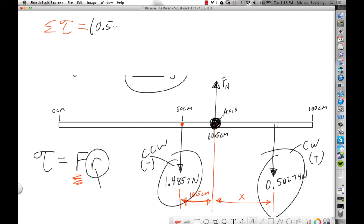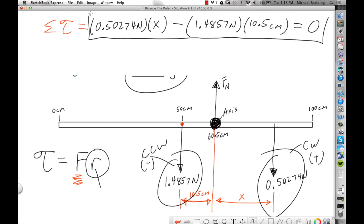we're going to go 0.50274 Newtons times X - force times distance, and are they perpendicular? Yes. Then minus 1.4857 times 10.5 centimeters. Now, I usually have you guys convert to meters. It doesn't matter here. If you leave this in centimeters, then that means that X will come out in centimeters. So let's just leave it in centimeters. In this class, the sum of the torques will be 0, which simply means the torques will cancel.